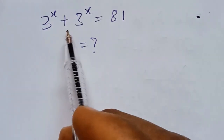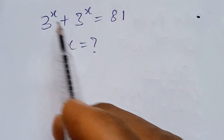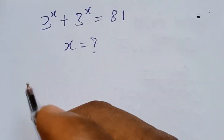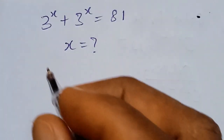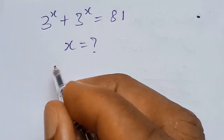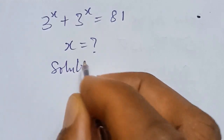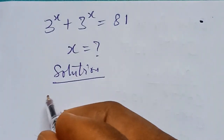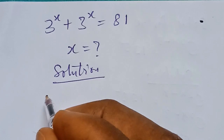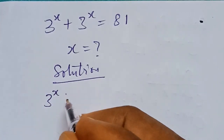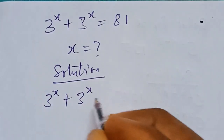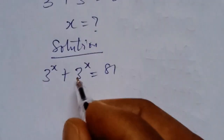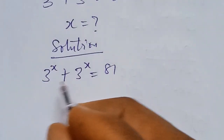We have 3^x plus 3^x equals 81. What is the value of x? For the solution, we start from the expression 3^x plus 3^x equals 81. From here we factor out 3^x from the left-hand side.